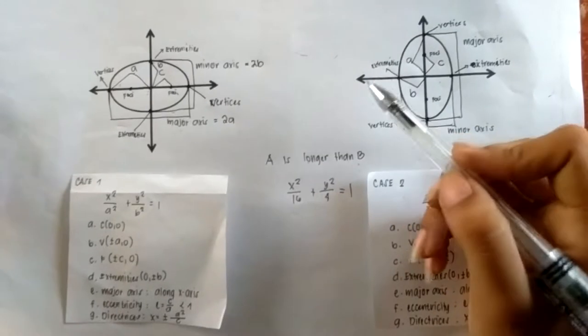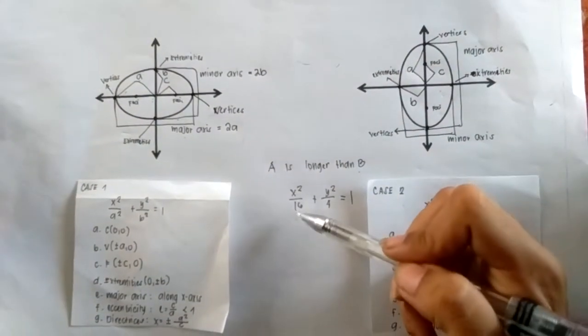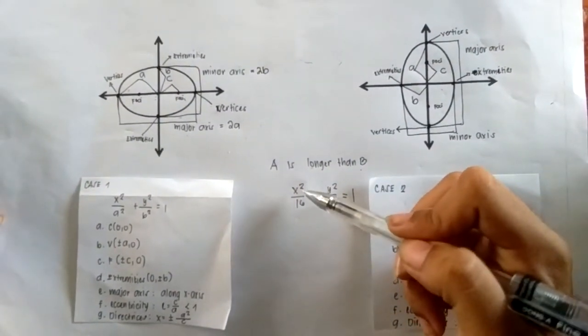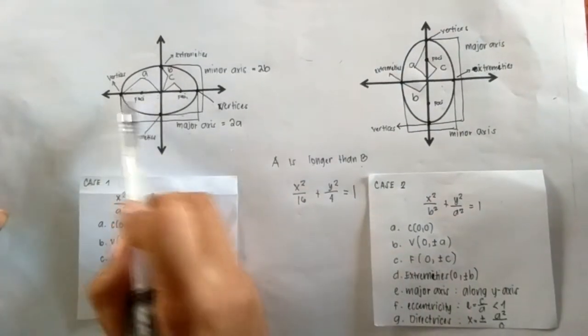Yes, it would be elongated horizontally since our larger number, which is 16, is under our x. And that means our ellipse would be elongated horizontally.